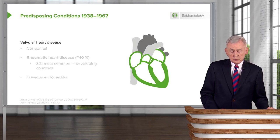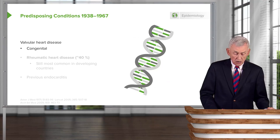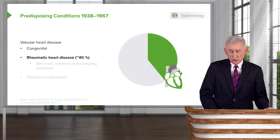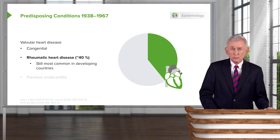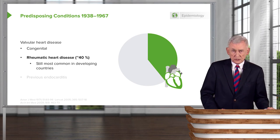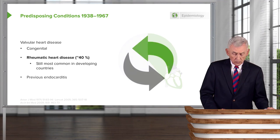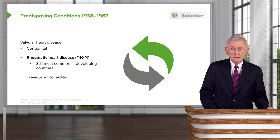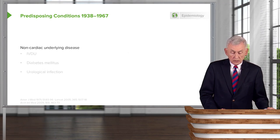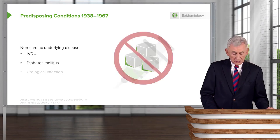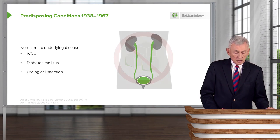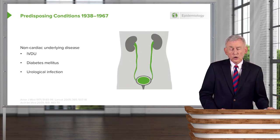The predisposing conditions between 1938 and 1967 were primarily valvular heart disease — congenital heart disease and rheumatic heart disease — accounting for about 40% of the damaged valves leading to infective endocarditis. It's important to point out that this still is a very common predisposing factor in developing countries. Patients who've had endocarditis in the past are particularly predisposed to get it again. Non-cardiac underlying disease was seen in IV drug users, diabetics, and patients with urological infections undergoing instrumentation.